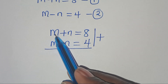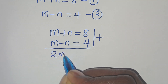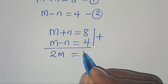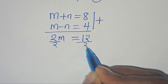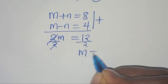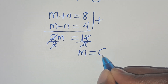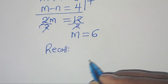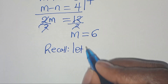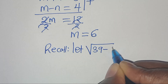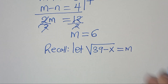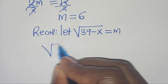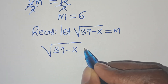Adding the two equations together: m plus m gives 2m, and n plus (minus n) cancels. On the right side, 8 plus 4 equals 12. Dividing both sides by 2, we get m equals 6. Recalling that the square root of 39 minus x equals m, we now have the square root of 39 minus x equals 6.